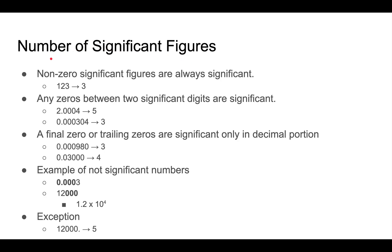We'll first go over significant figures in numbers. Non-zero digits are always significant — so 1, 2, 3 has three significant figures, and 4, 5, 6 also has three significant figures. Any zeros between two significant digits are also significant. Since non-zero digits are always significant, the 2 and 4 in a number like 20004 are significant, and any zeros between them are also significant.